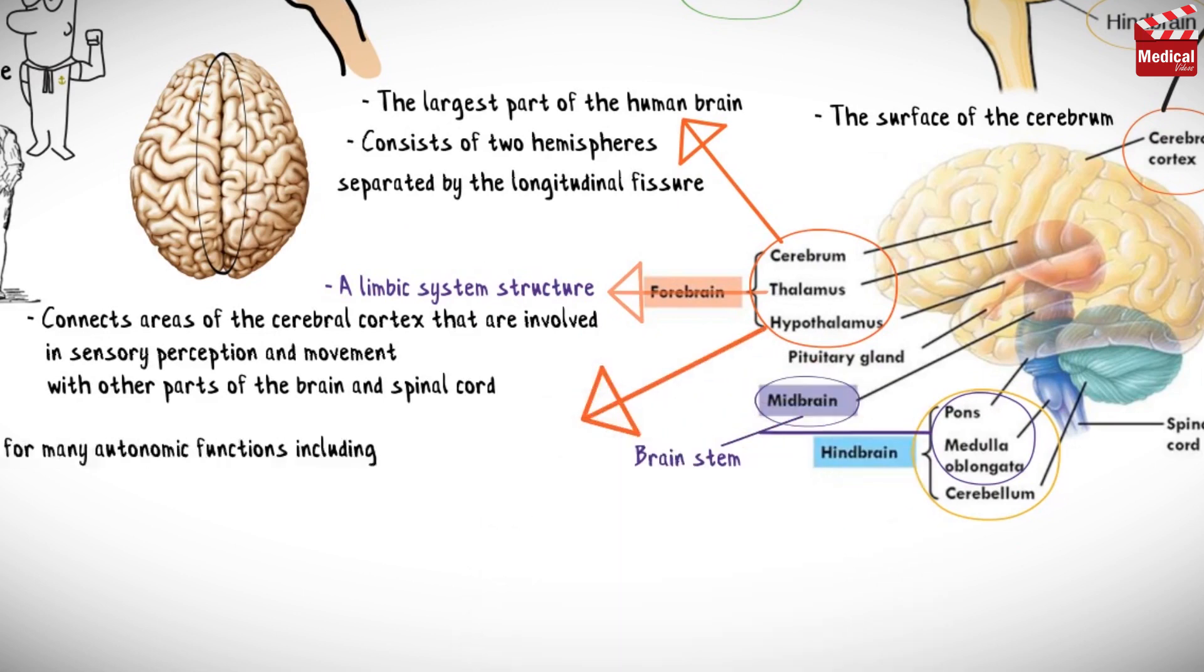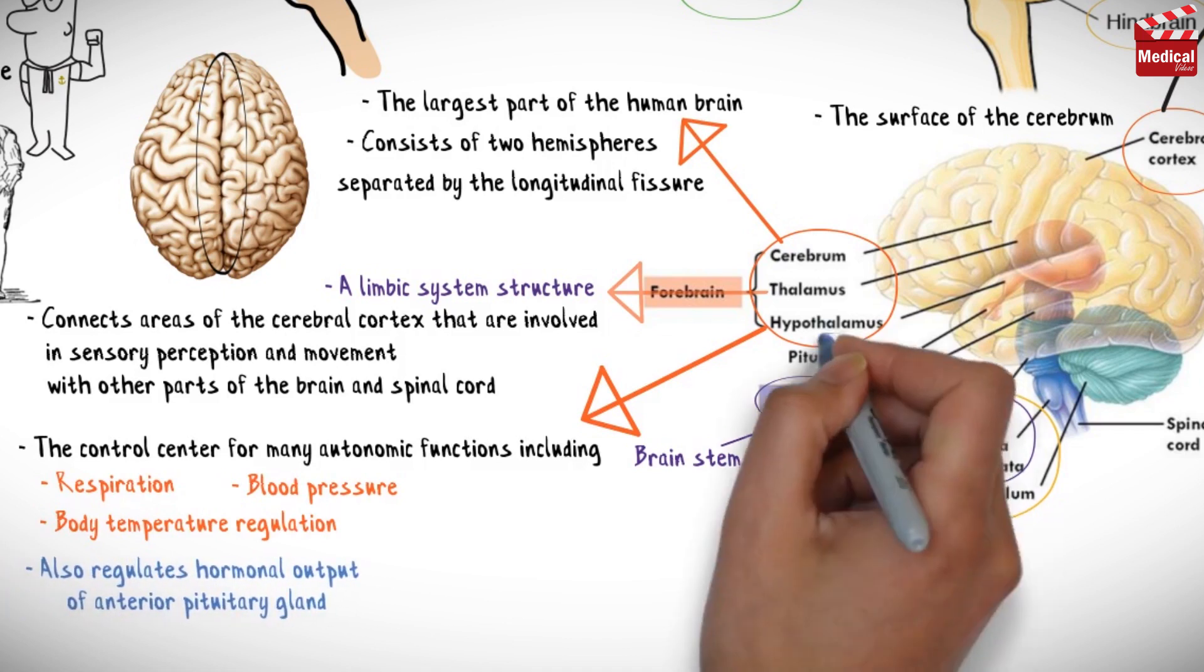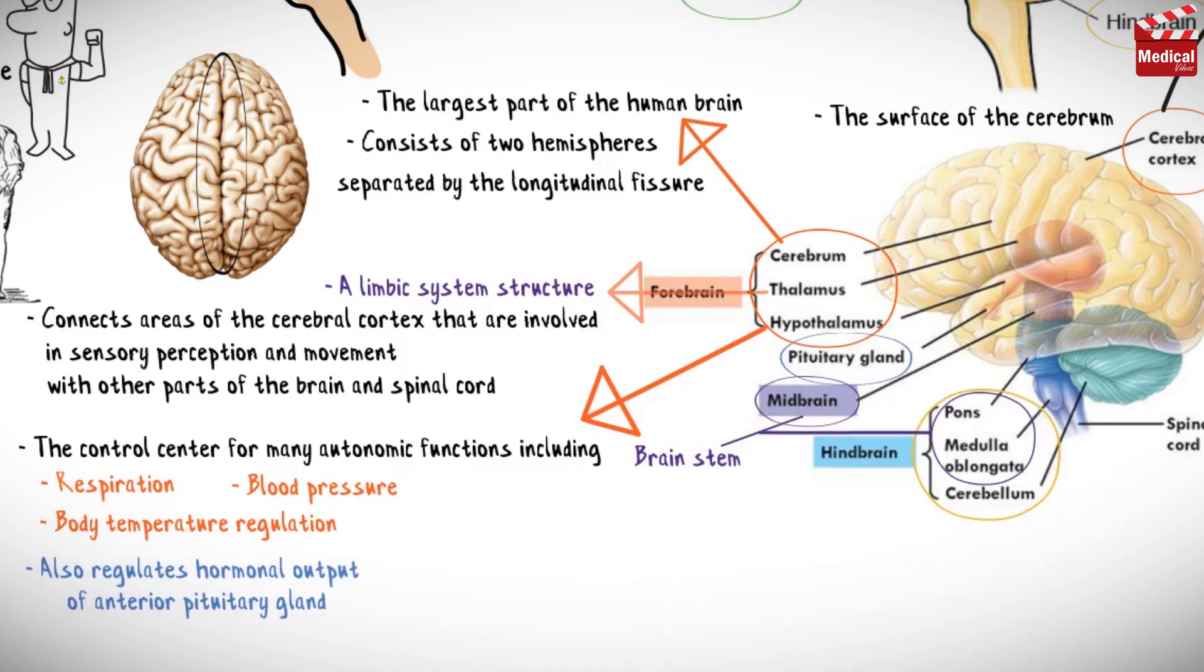Hypothalamus acts as the control center for many autonomic functions, including respiration, blood pressure, and body temperature regulation. It also regulates the hormonal output of the anterior pituitary gland and acts as an endocrine organ.